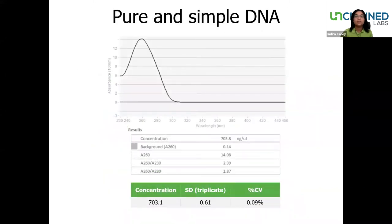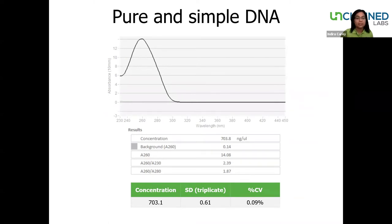Here we're looking at results from a sample of high-quality calf thymus DNA in TE buffer — a typical result for a clean sample. You can see the expected peak maximum at 260 nanometers, and the quality ratios are within an acceptable range. Note also the accuracy and reproducibility — we're seeing nice low standard deviations and coefficient of variation readouts for triplicate reads.